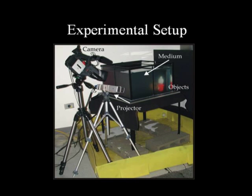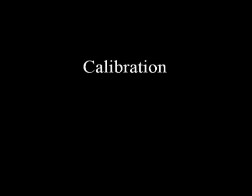We have extended two structured light methods — light striping and photometric stereo — to work in scattering media. Our light stripe range-finding experiments were done using a glass tank filled with scattering media such as dilute milk, a projector, and a video camera. The desired objects are placed within the medium.